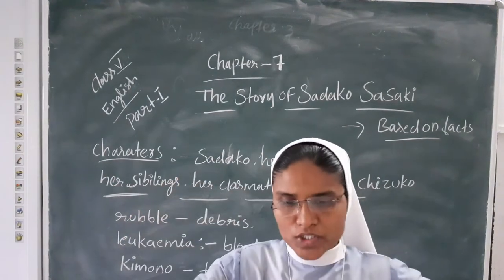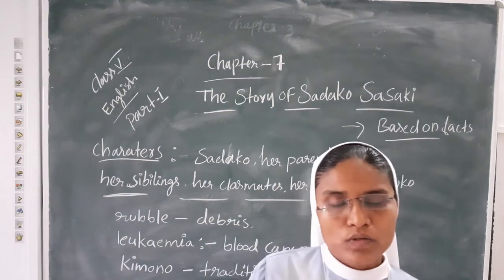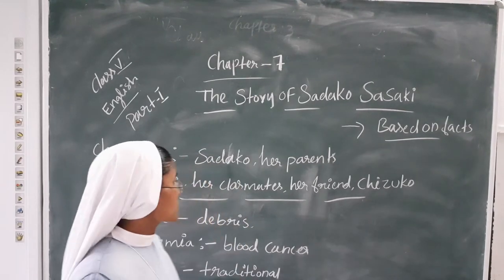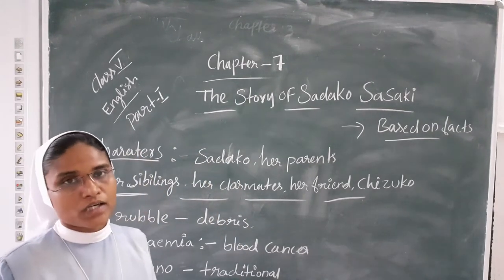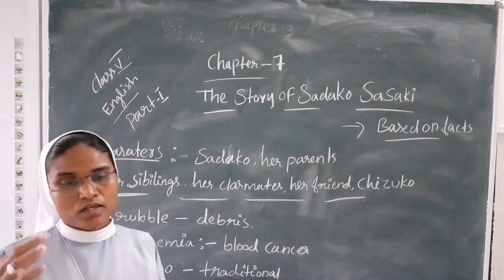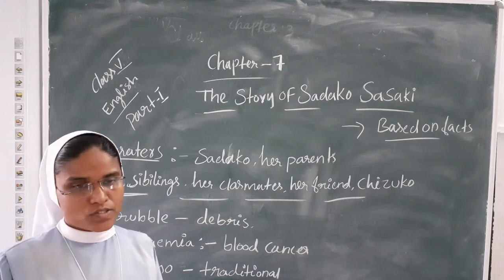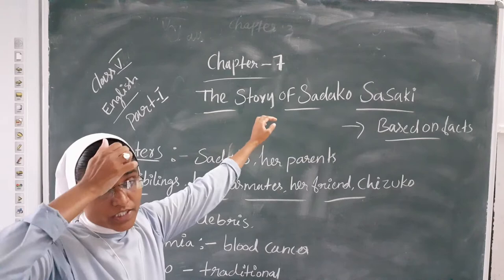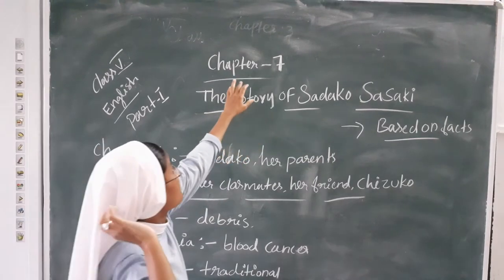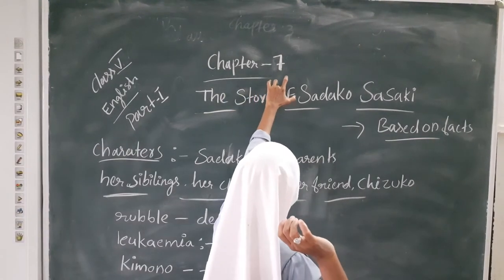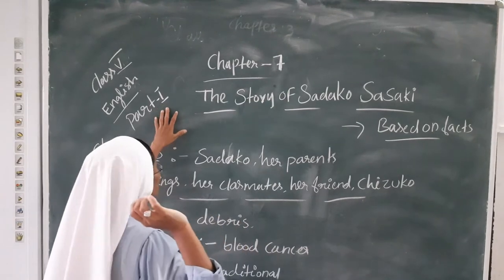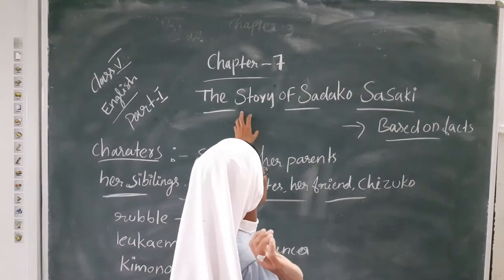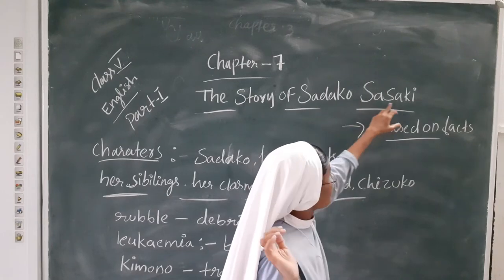So now we go into the chapter. First we look at the characteristics of the story. Now from the English textbook, the 7th chapter — this is the first part — the name of the story.